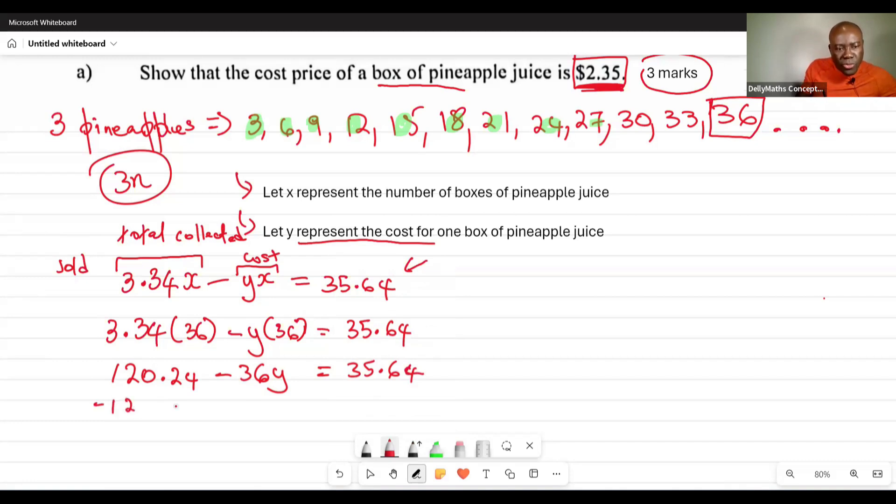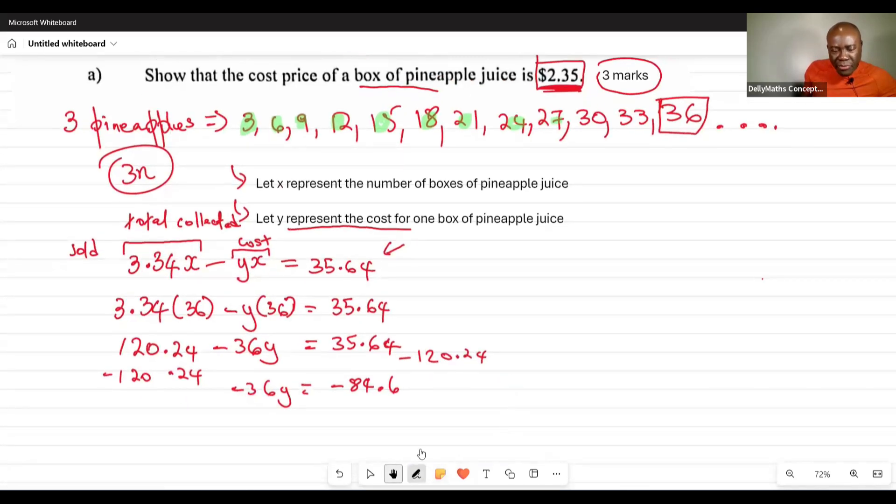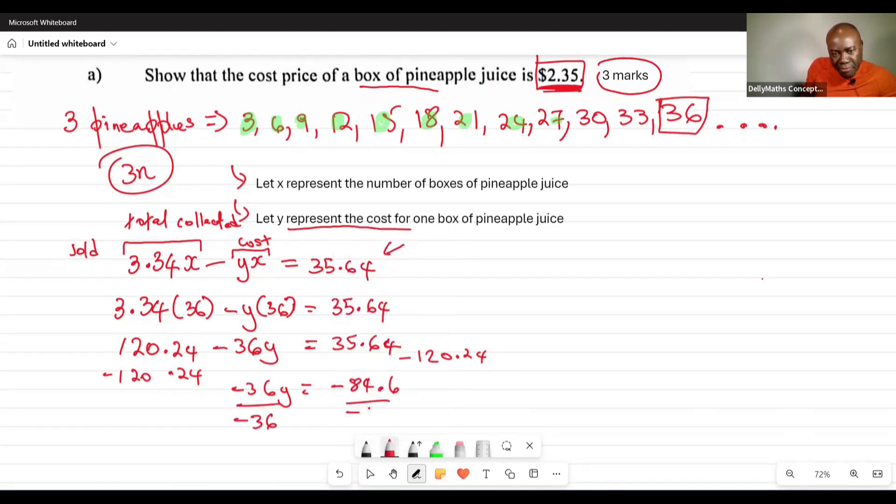Let's subtract 120.24 from both sides. Negative 36y equals negative 84.6. To find y, I divide both sides by negative 36. Negative 84.6 divided by negative 36 tells me that y equals $2.35. This proves that one box would have cost this because I just found y, and y represents the cost for one box.